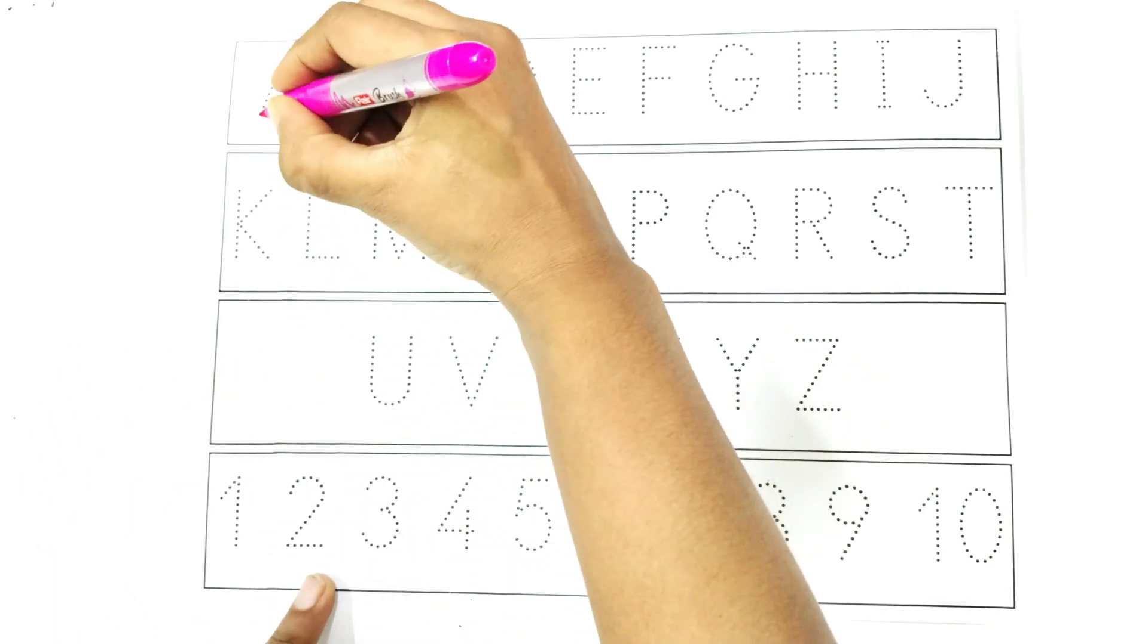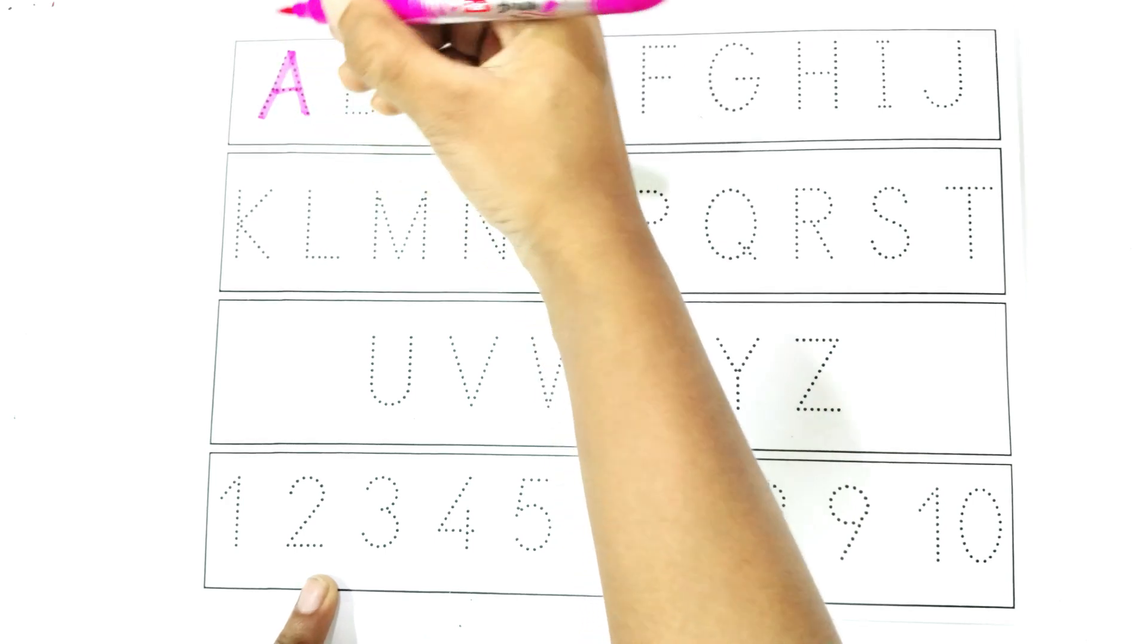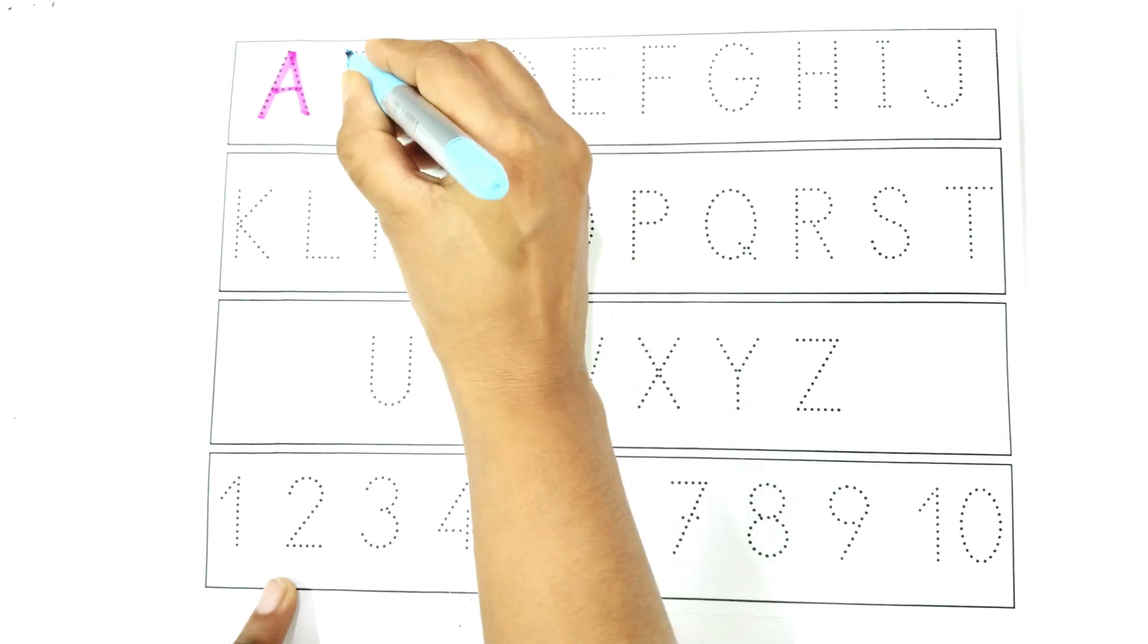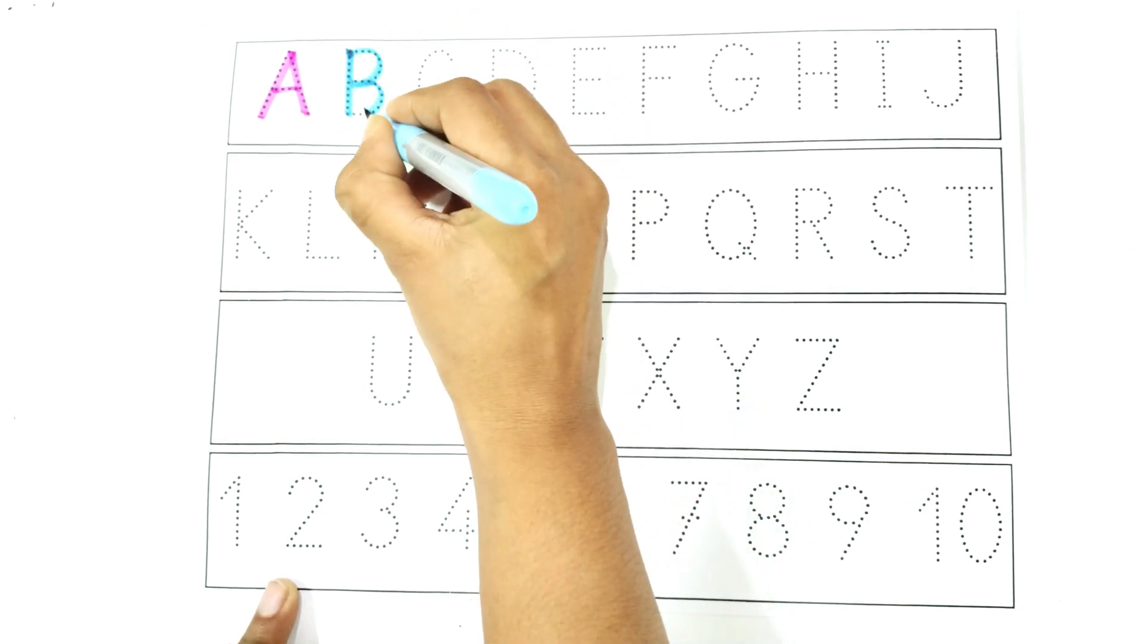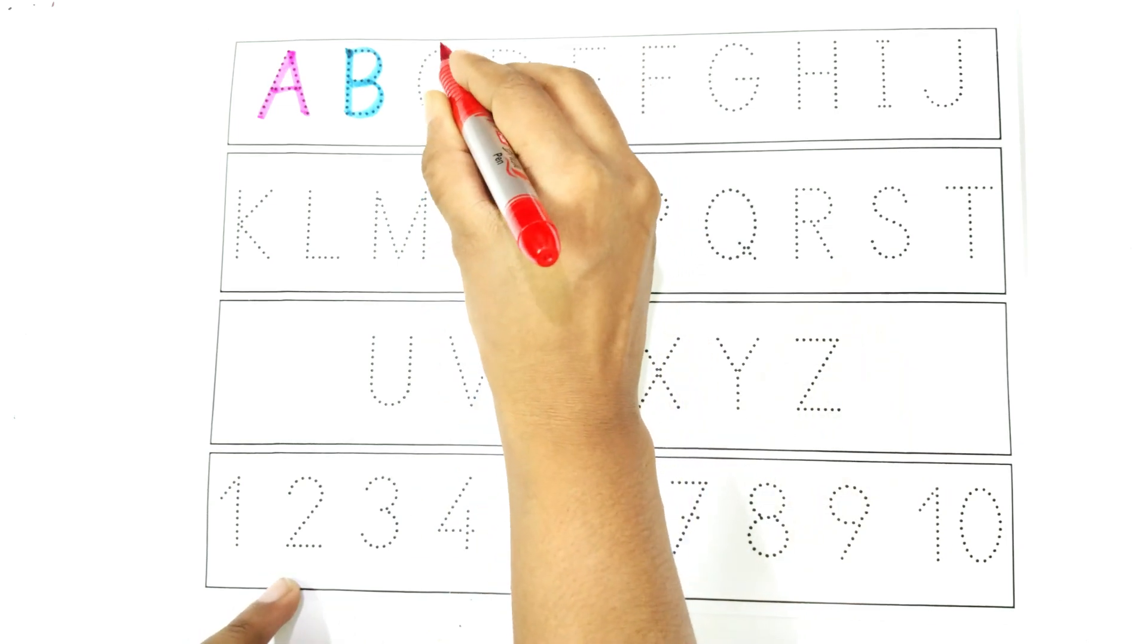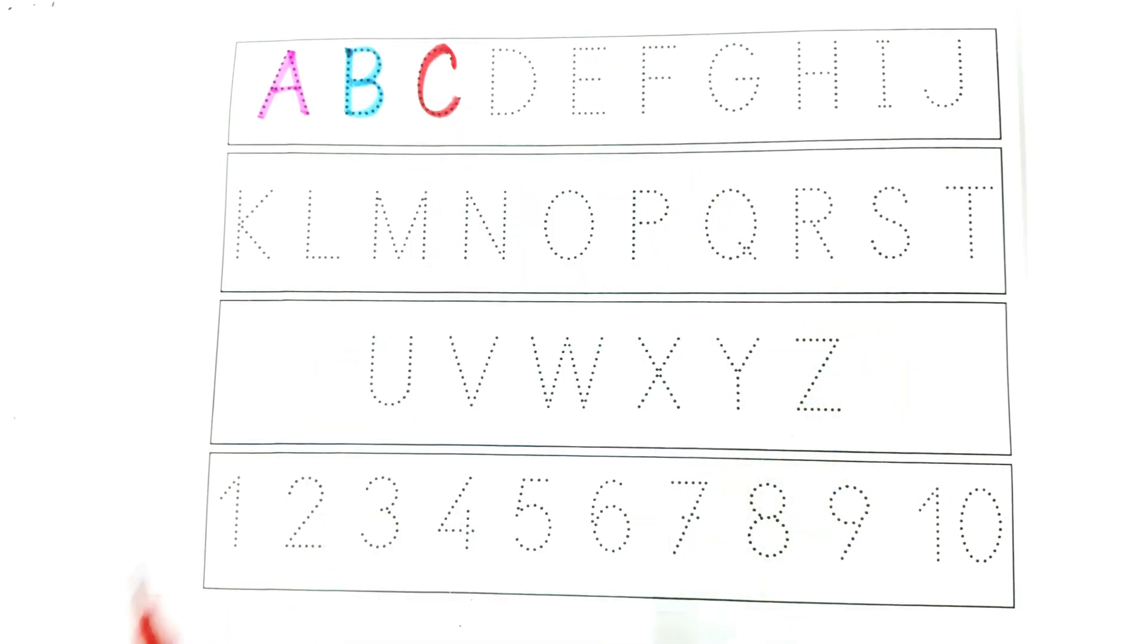Write with me: A. A is for aeroplane. Write with me: B. B is for butterfly. Write with me: C. C is for car.